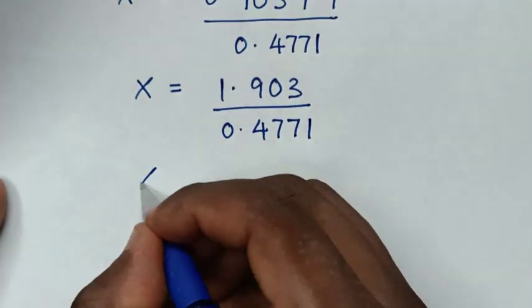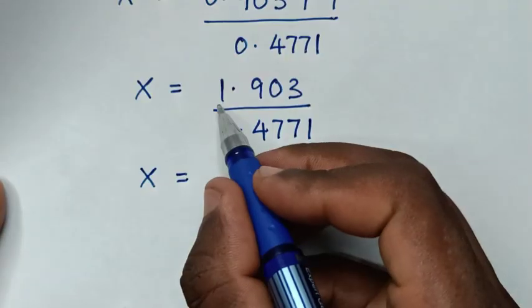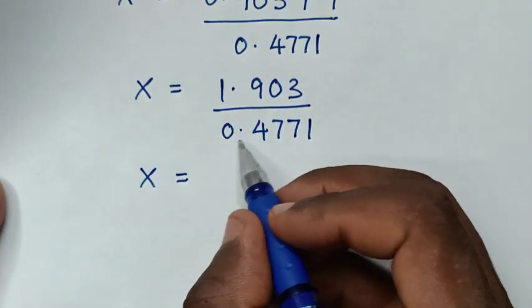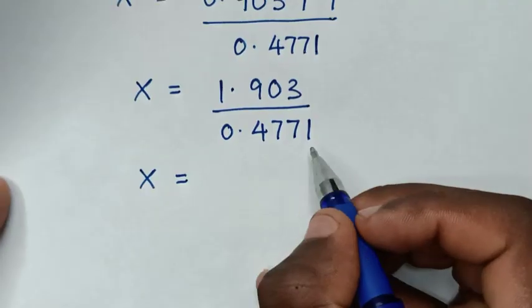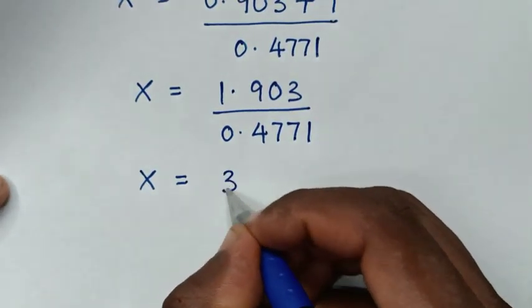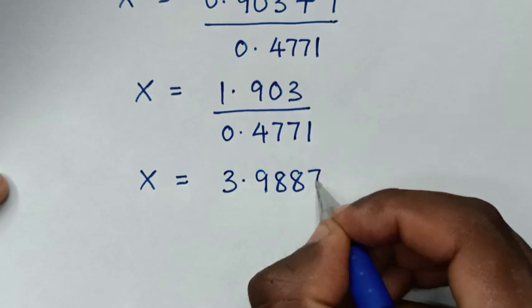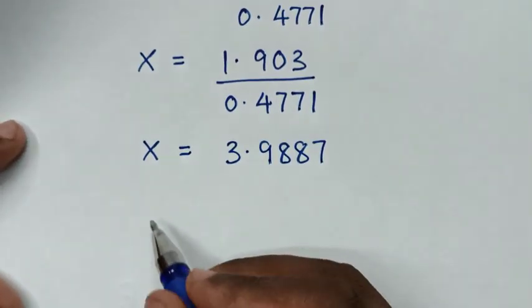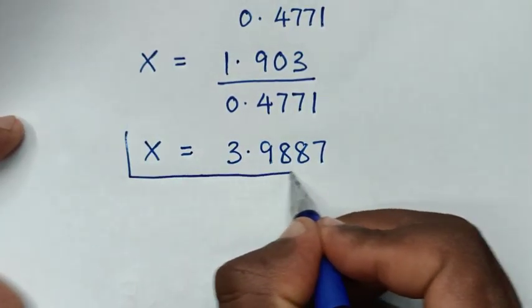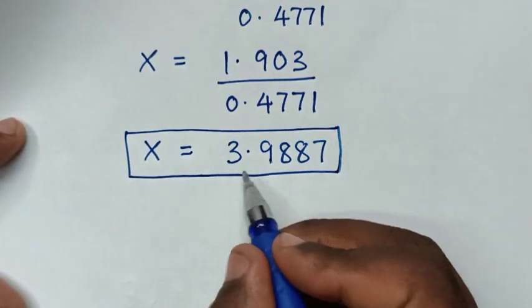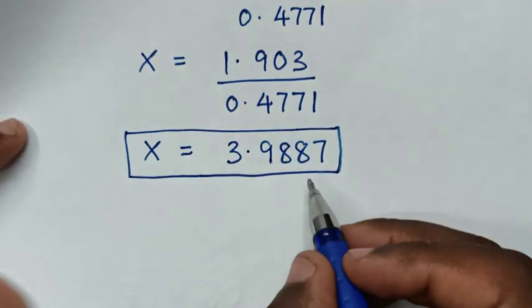Then it will be x is equal to 1.903 divided by 0.4771, which is 3.9887. Therefore, this is the final answer for the value of x in this problem, 3.9887.